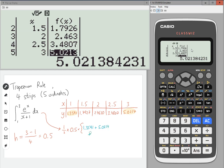Plus two lots of the rest, so 1.7927 plus 2.4630 plus 3.4807.